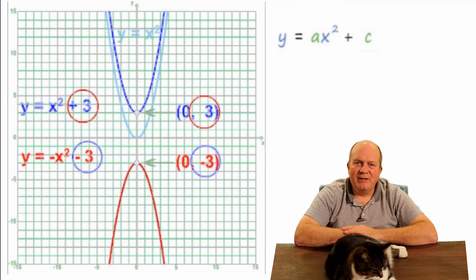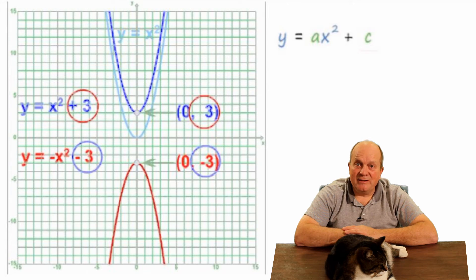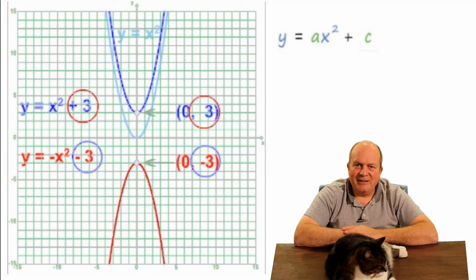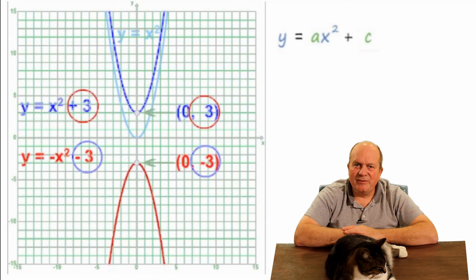So the constant term in the quadratic formula gives us the Y coordinate for the vertex of the parabola. We also saw how the sign in front of the X squared term causes the parabola to either face up or face down, depending on whether the coefficient is positive or negative. I'm going to put up a link to a video with more detail on the sign in front of the X squared term, and also a link to a video that shows how the magnitude of the coefficient in front of the X squared term affects the shape of the parabola.